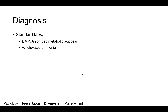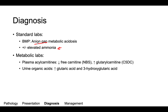The diagnosis is made initially using standard labs. On a BMP in an acutely ill patient, we'd expect to see an anion gap metabolic acidosis, because we have anions — glutaric acid — present in the blood. We may or may not see an elevated ammonia level, which is typically associated with urea cycle disorders. However, the distinguishing factor of organic acidemia is this anion gap on BMP. Other metabolic labs include plasma acylcarnitines, where we'd expect to see decreased free carnitine and increased glutarylcarnitine. In the urine, we'd expect to see increased glutaric acid and 3-hydroxyglutaric acid.